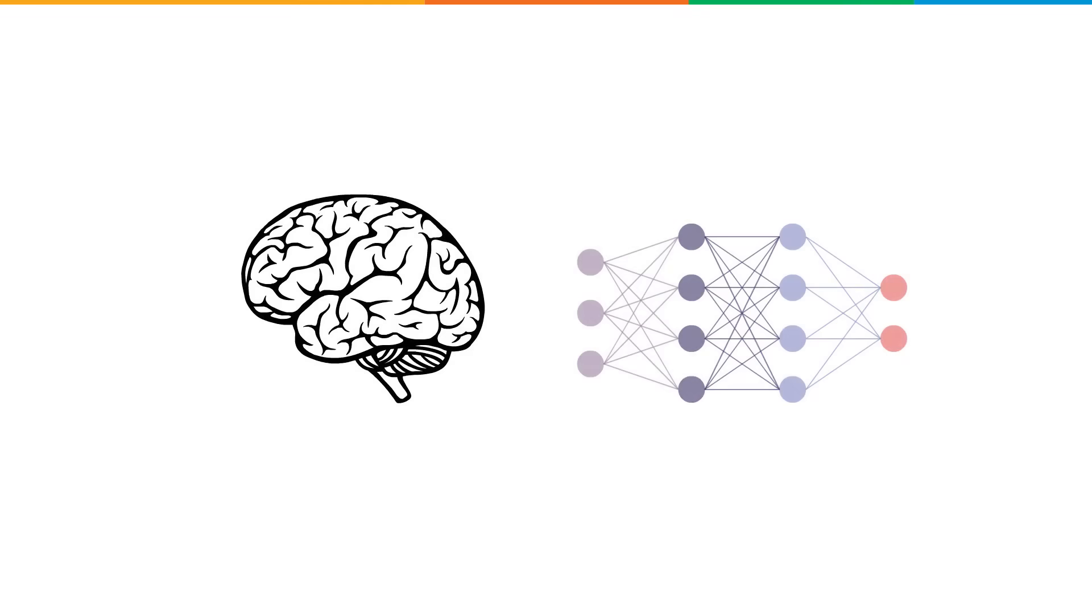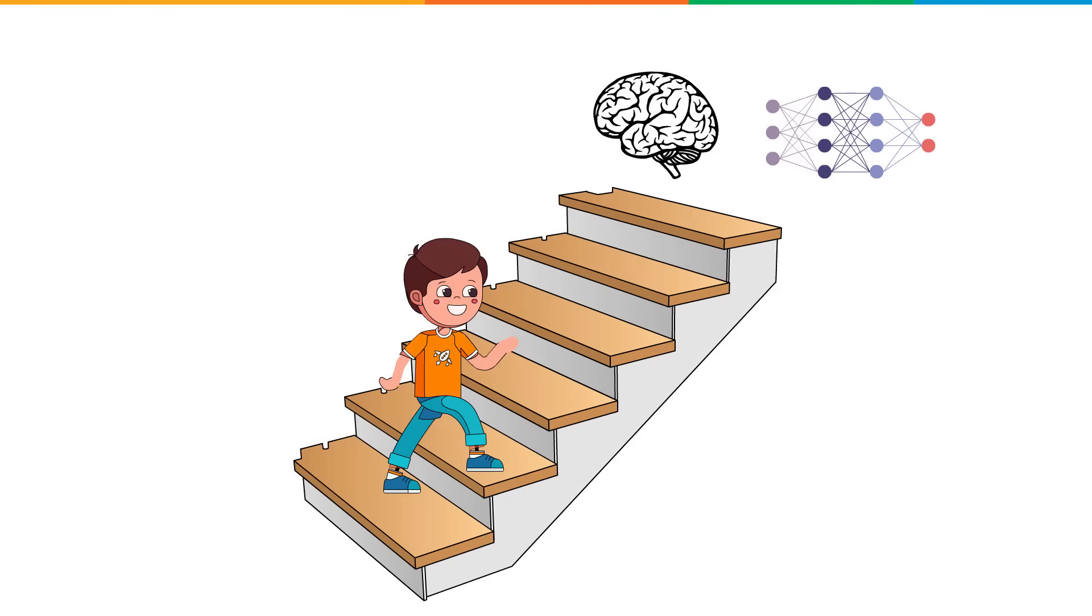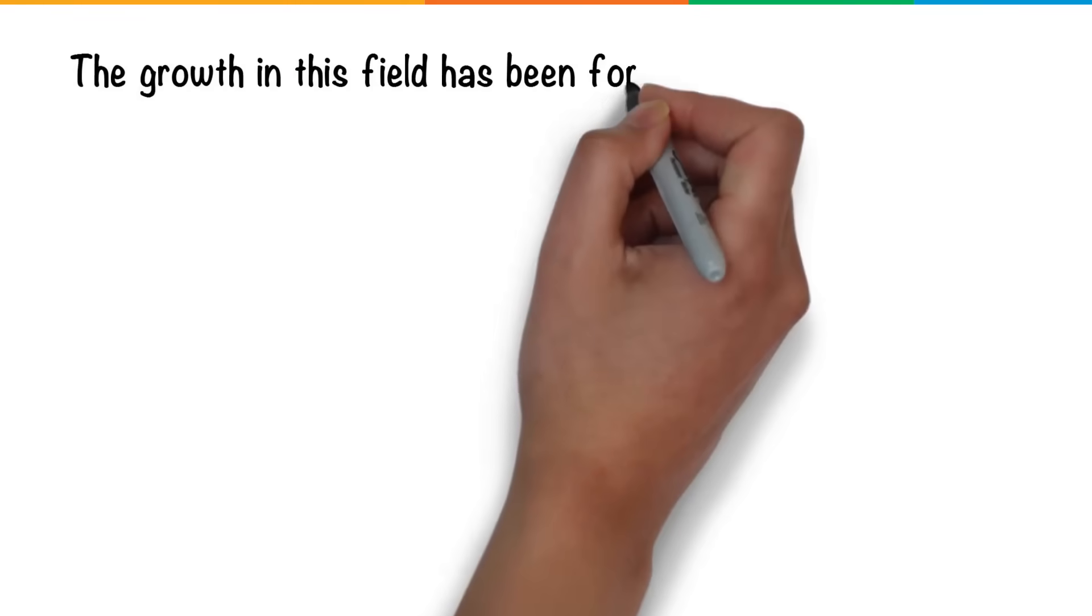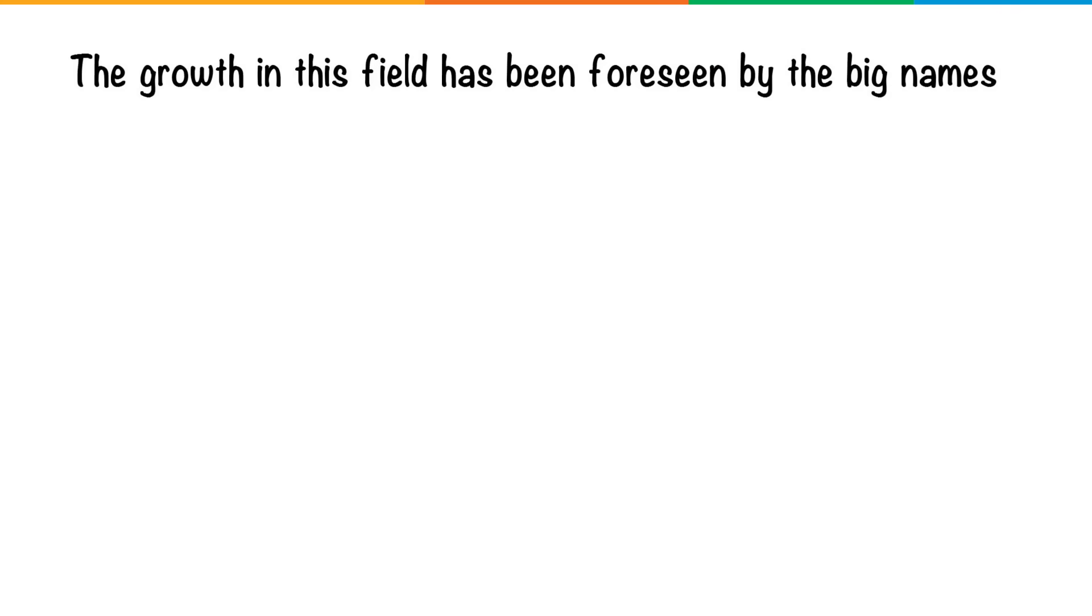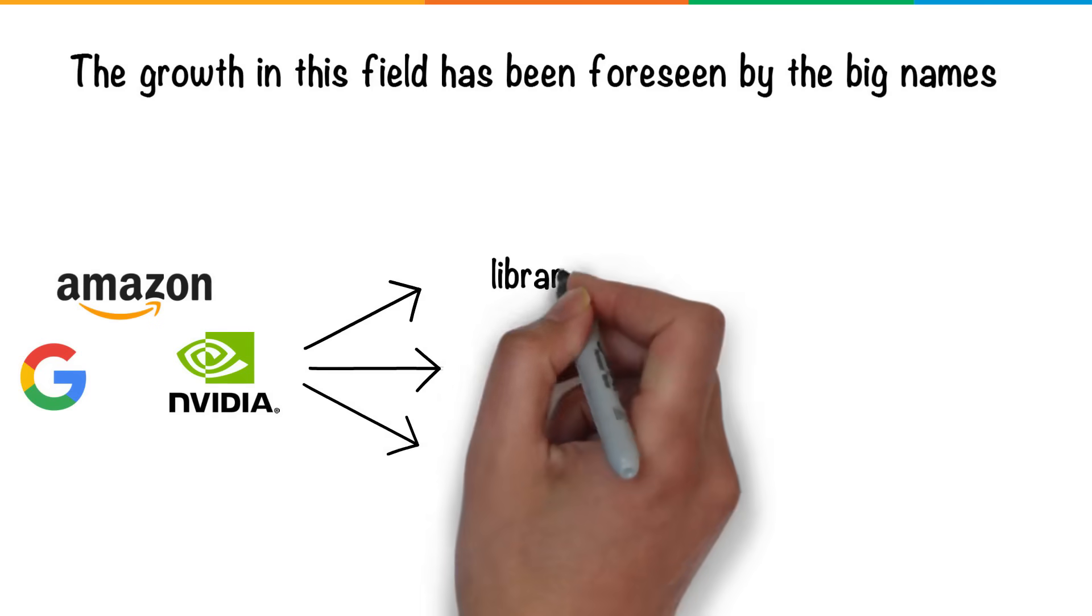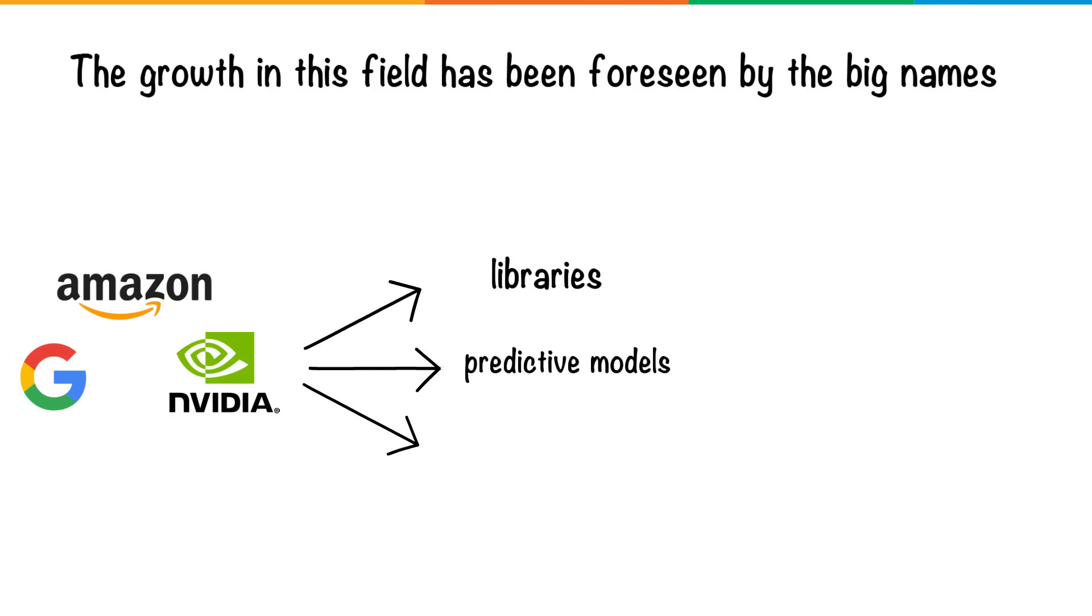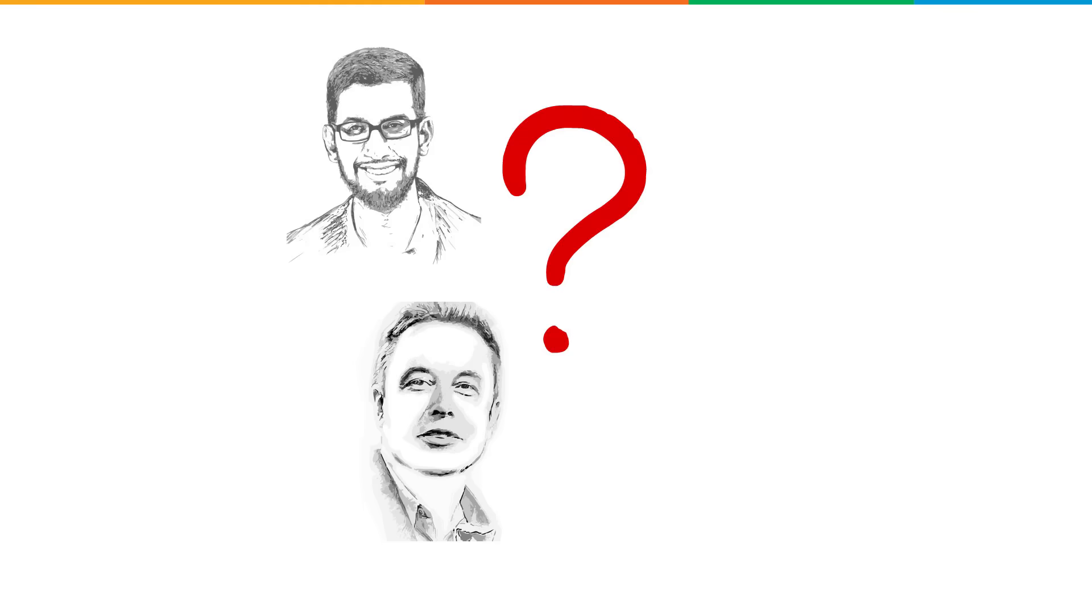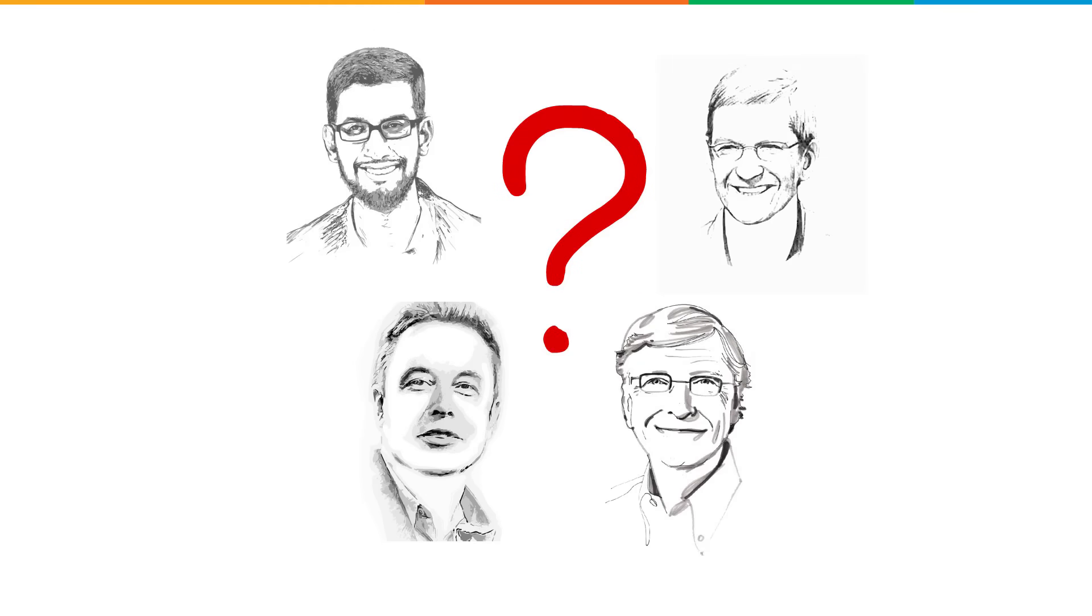With deep learning in neural networks, we are still taking baby steps. The growth in this field has been foreseen by the big names. Companies such as Google, Amazon, and Nvidia have invested in developing products such as libraries, predictive models, and intuitive GPUs that support the implementation of neural networks. The question dividing the visionaries is on the reach of neural networks.